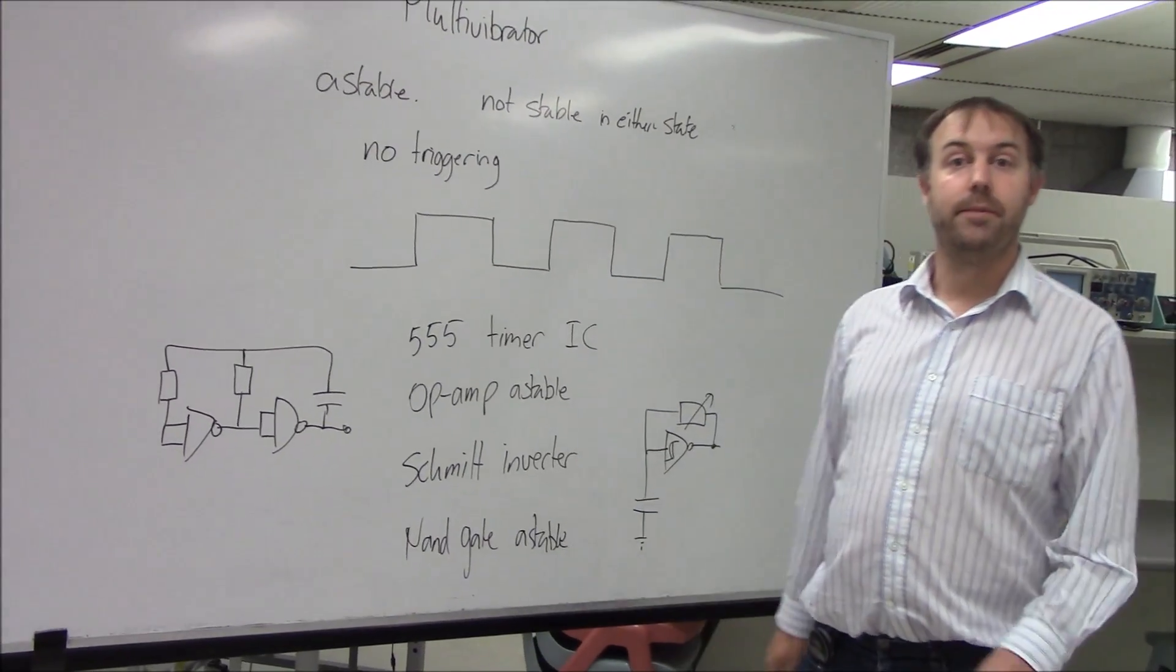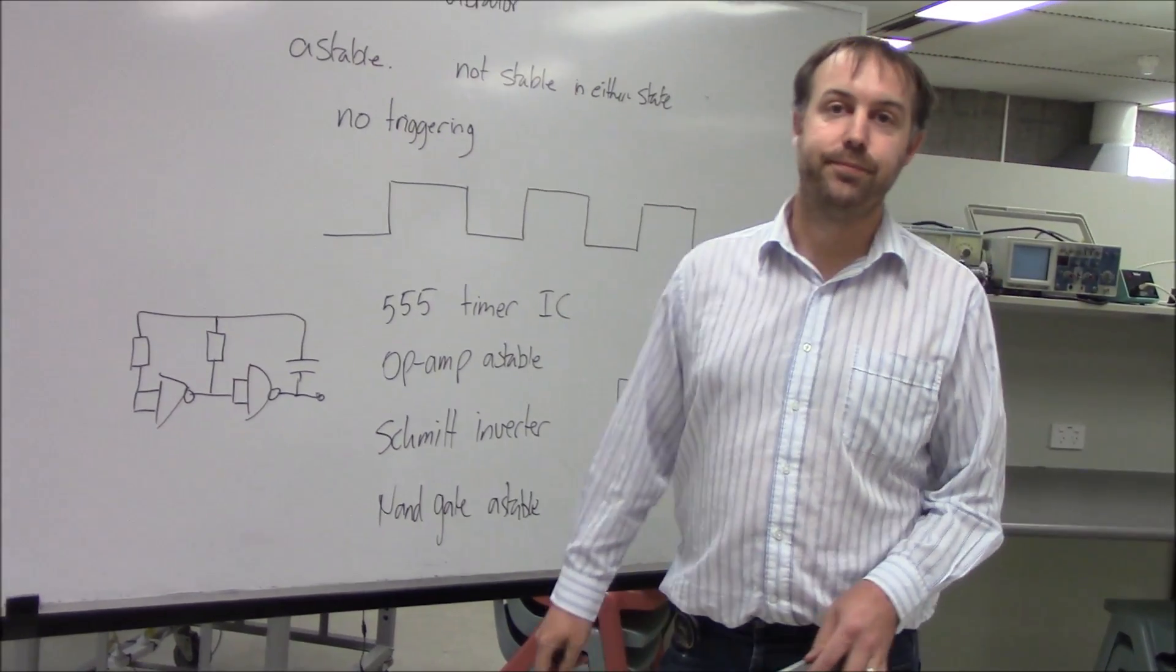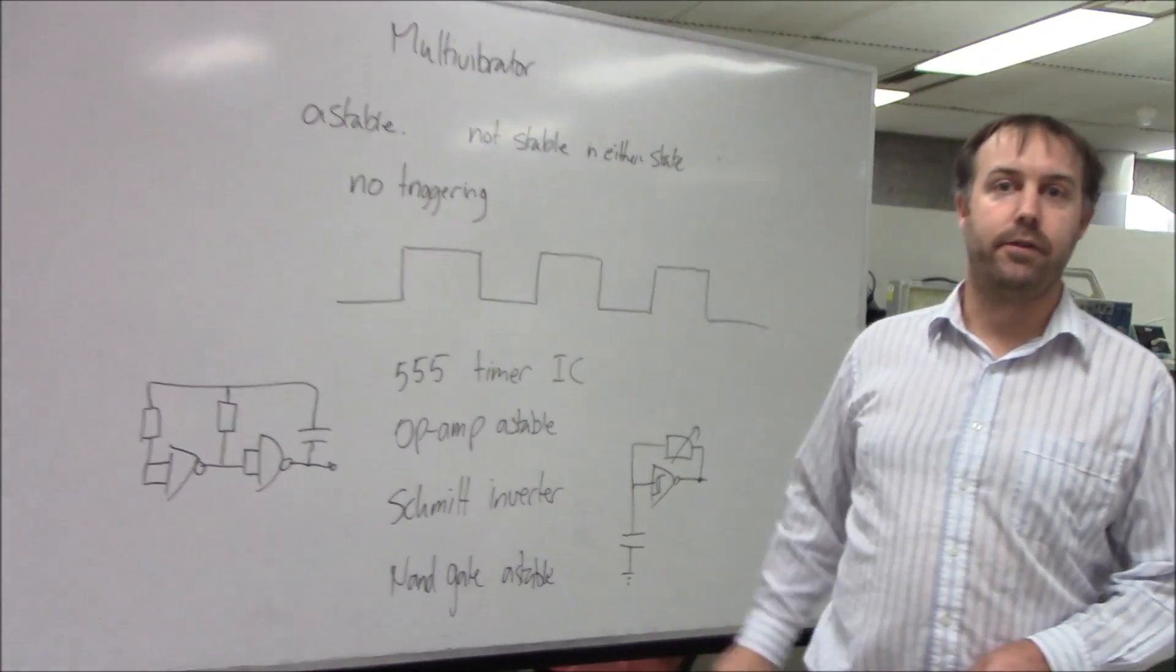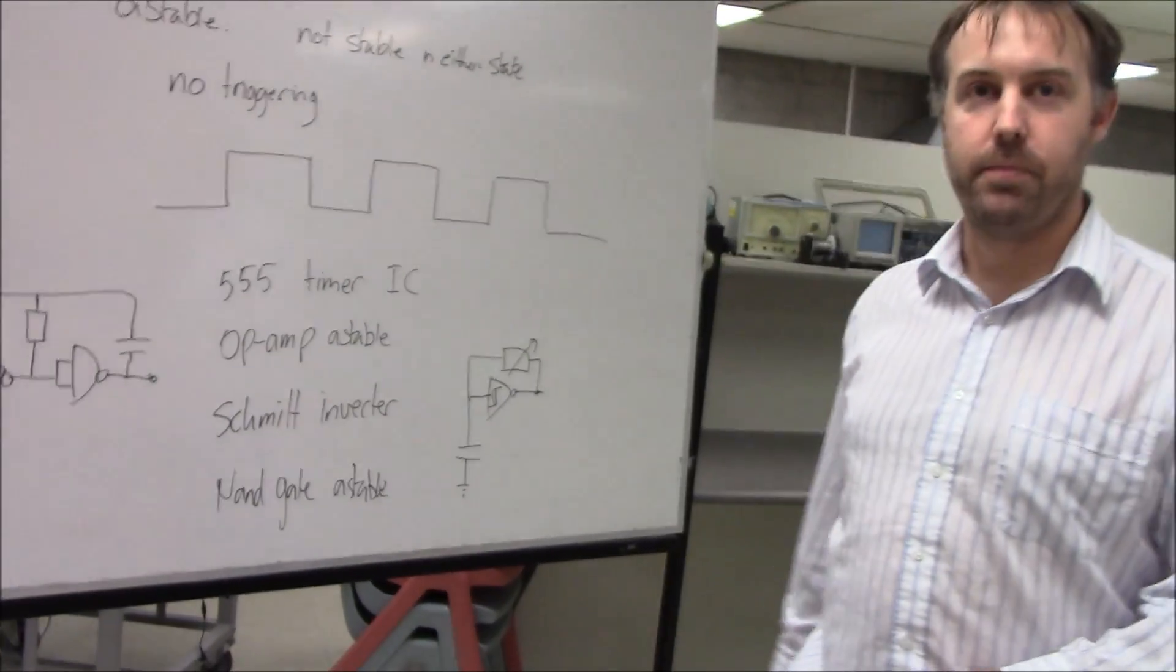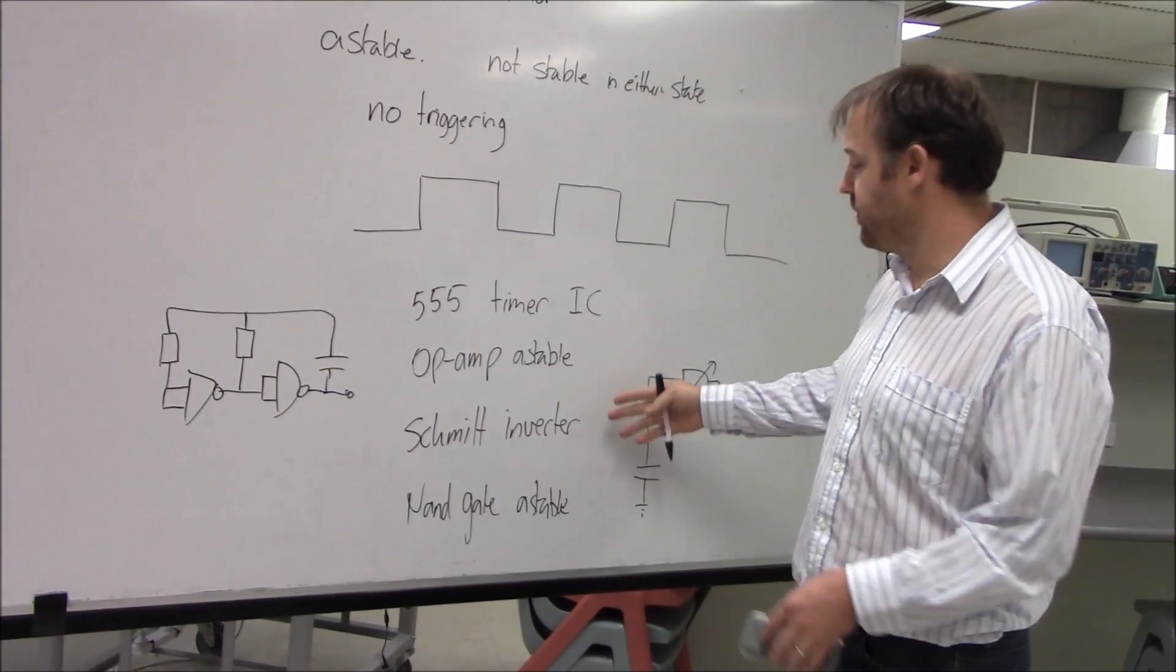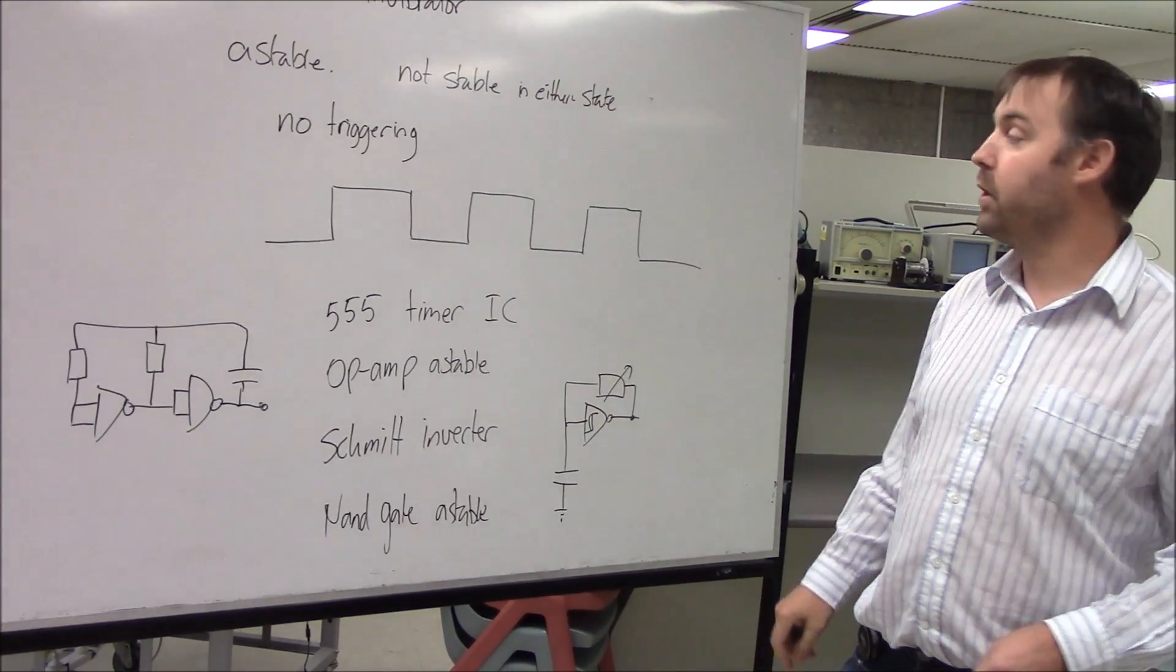Where's the input? There is no input. We don't need an input for our astable. No triggering through any of these because it just oscillates. It'll automatically keep doing it. So there are several different types and I'm sure that there are even more than what I've got here.